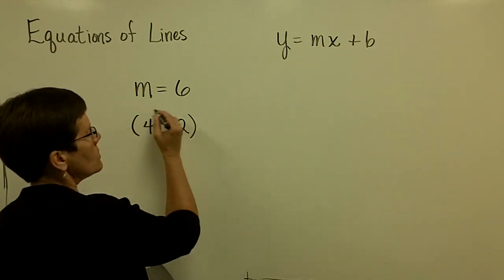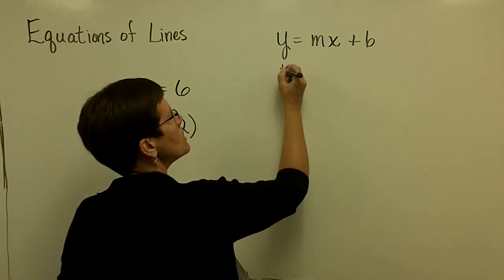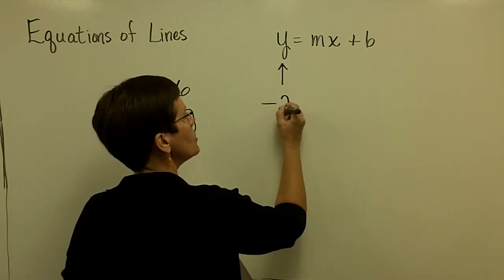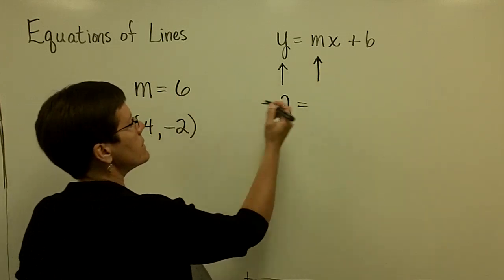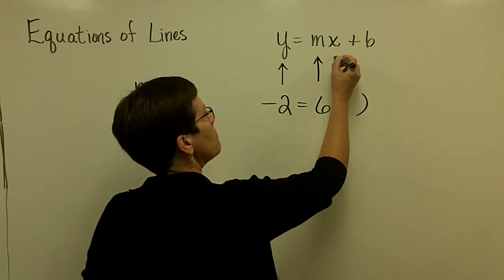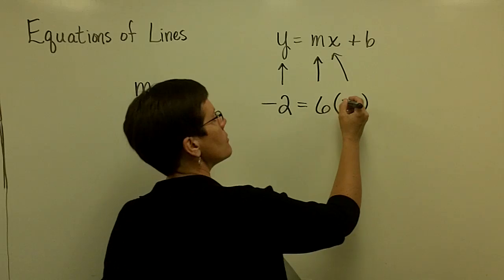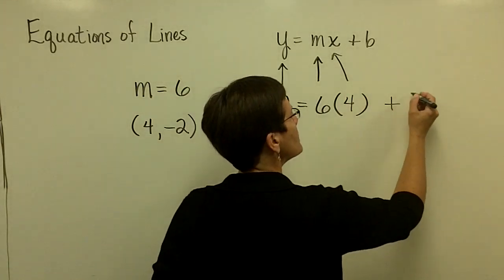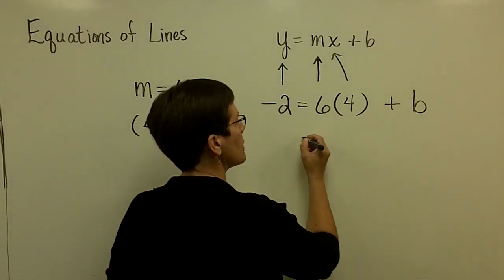So in this ordered pair, my y-value is a negative 2. So I'm going to substitute in right here a negative 2 for y. My slope for this line is 6. I'm going to substitute in a 6. And my x-value in this ordered pair is a positive 4. The only thing that I don't know is the letter b. So using order of operations, I'm going to multiply here.